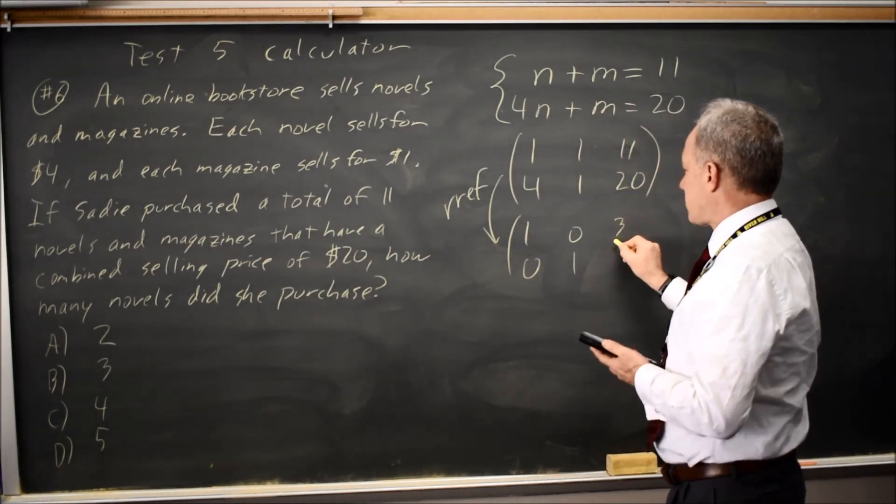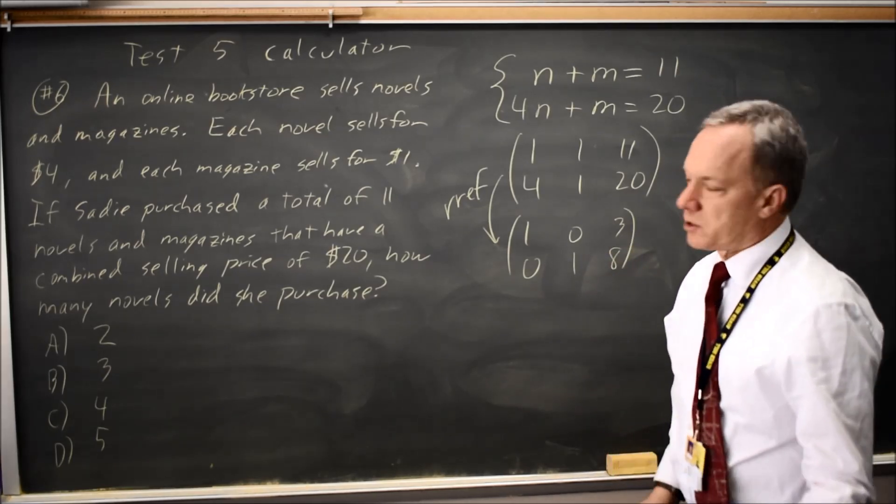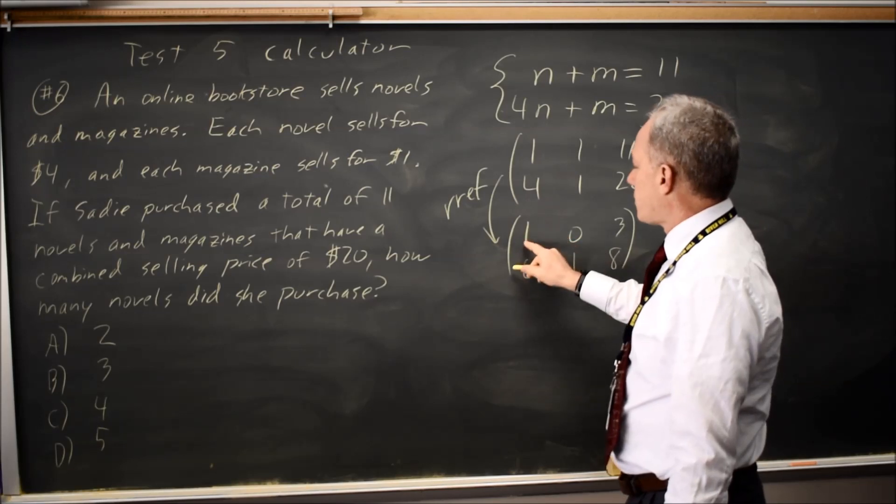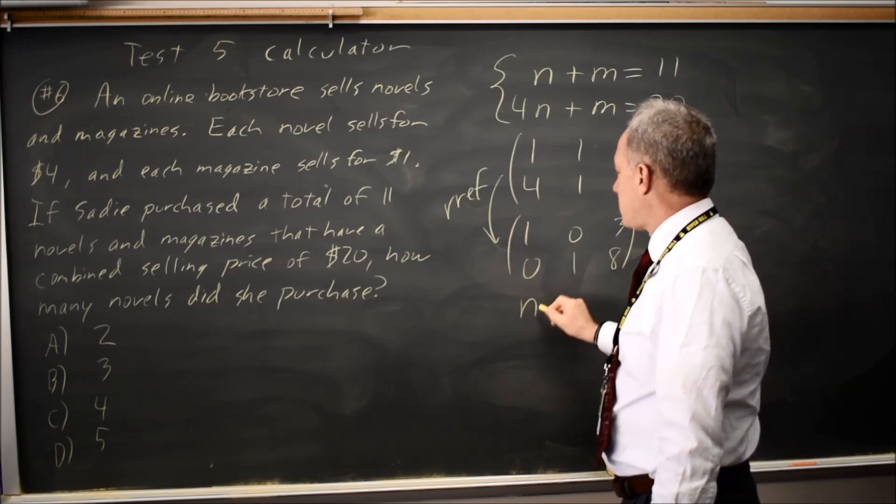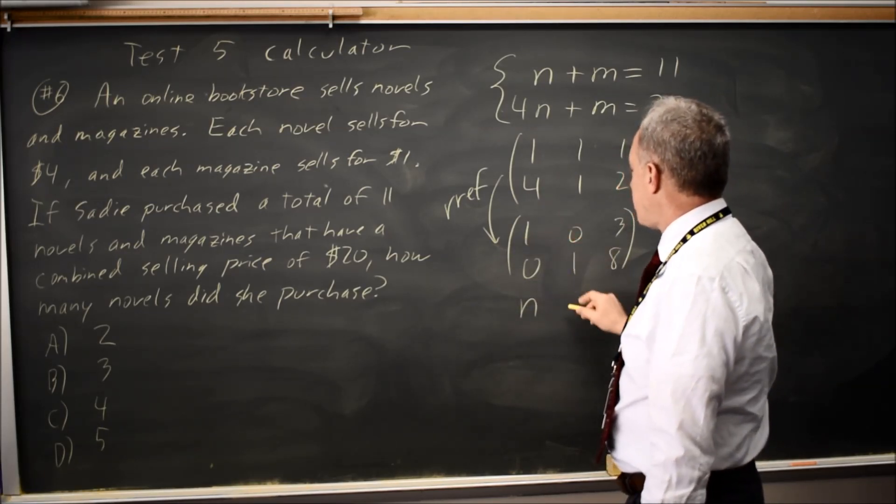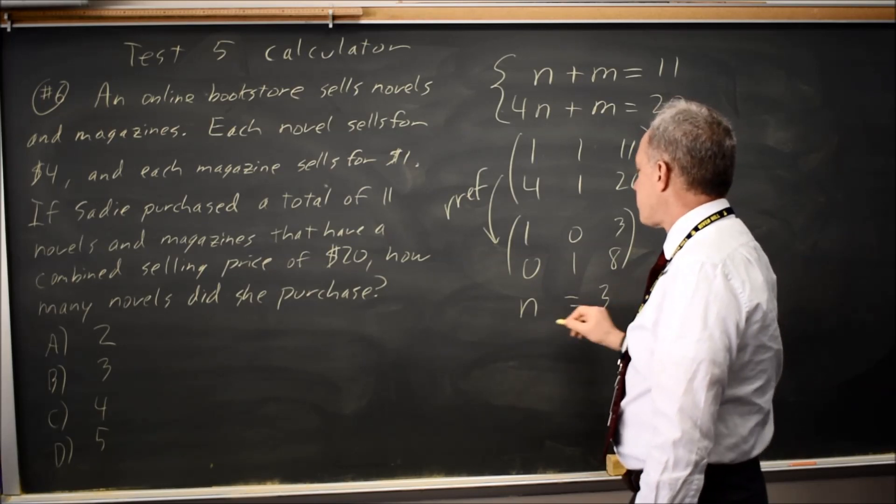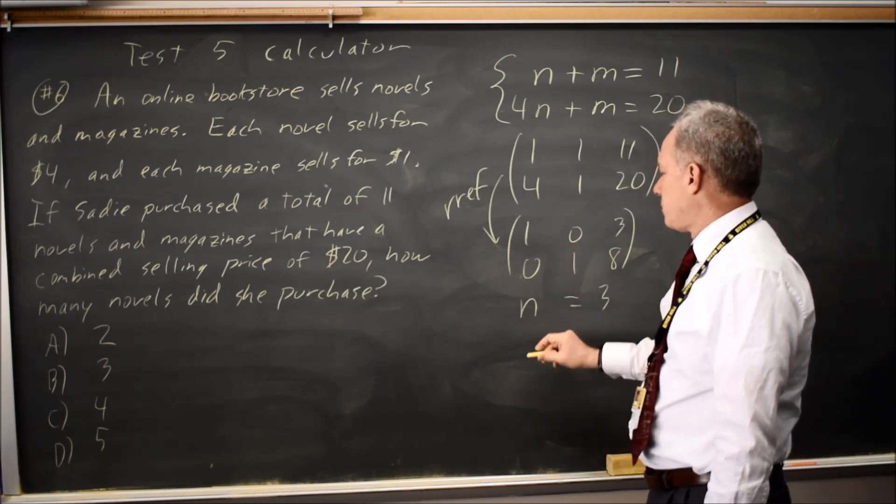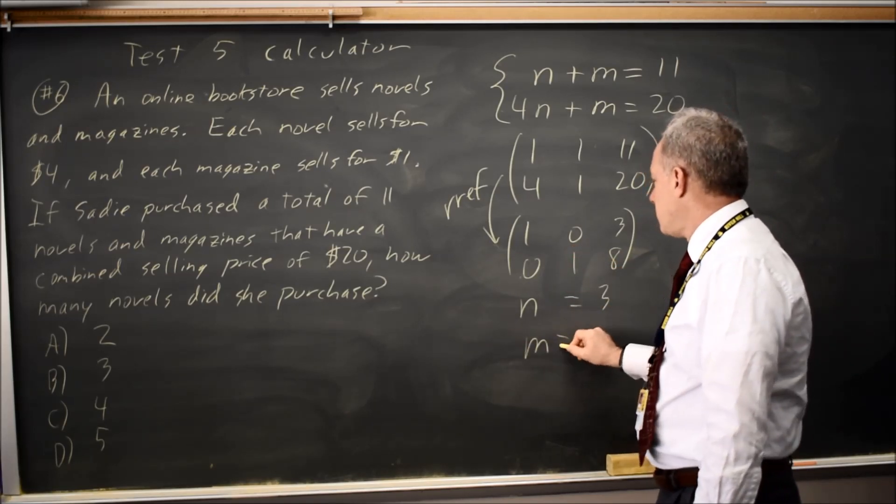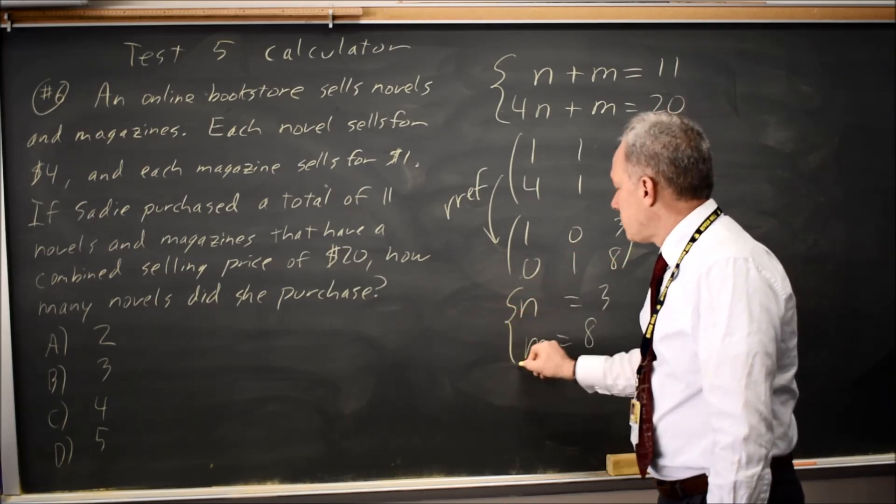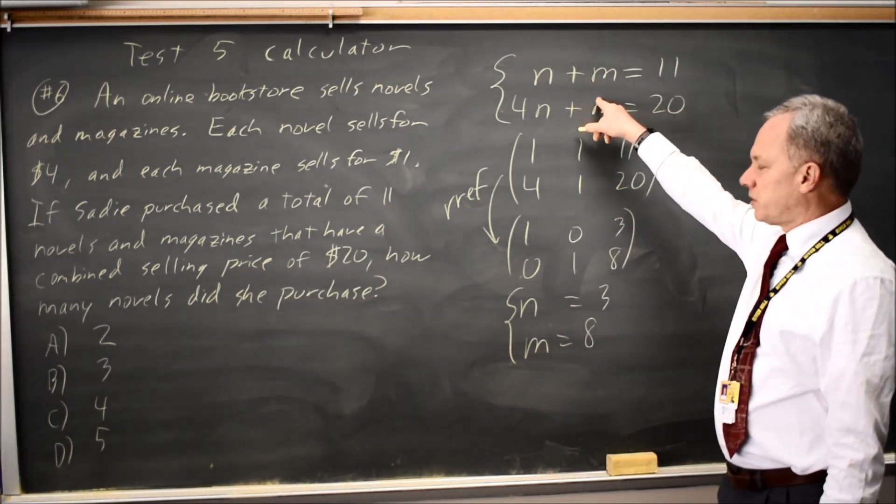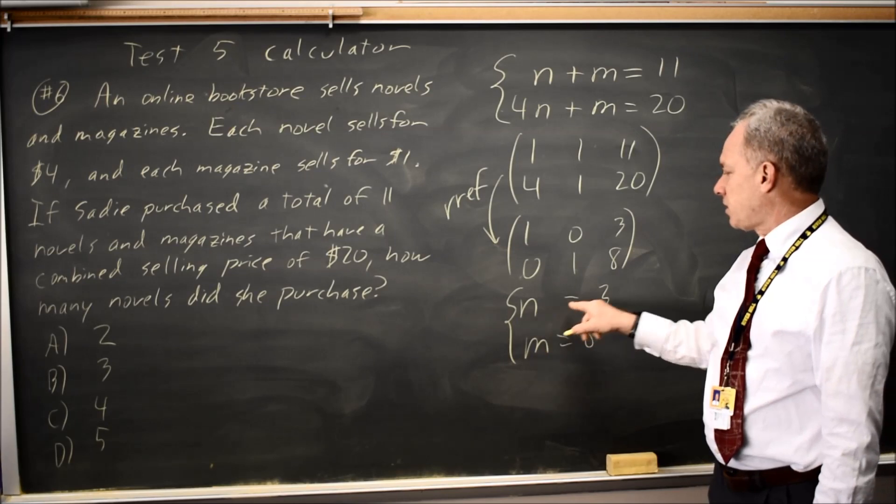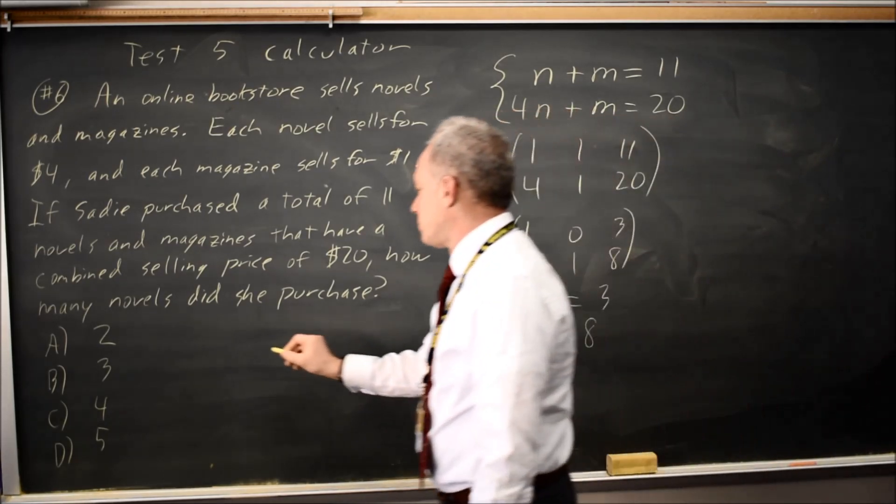We get one zero, zero one if there is a solution, and then the last column is three, eight. The same way I turn this n into a one, going backwards I turn this one into an n. One n plus zero m, so that's just n on the left, equals three. Zero n plus one m is just m equals eight. This system is equivalent to this original system, but you can solve it just by inspection. The n in the number of novels is three, which is choice C.